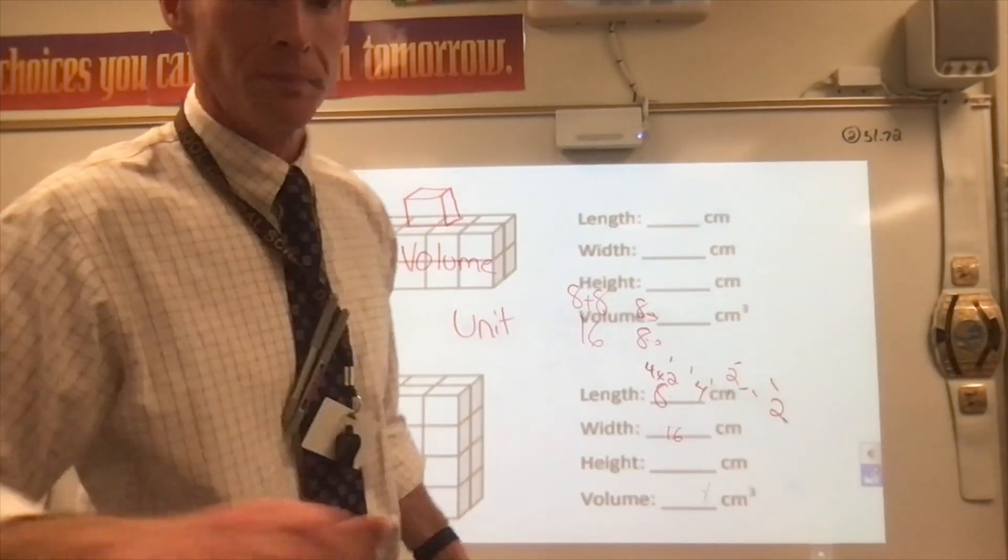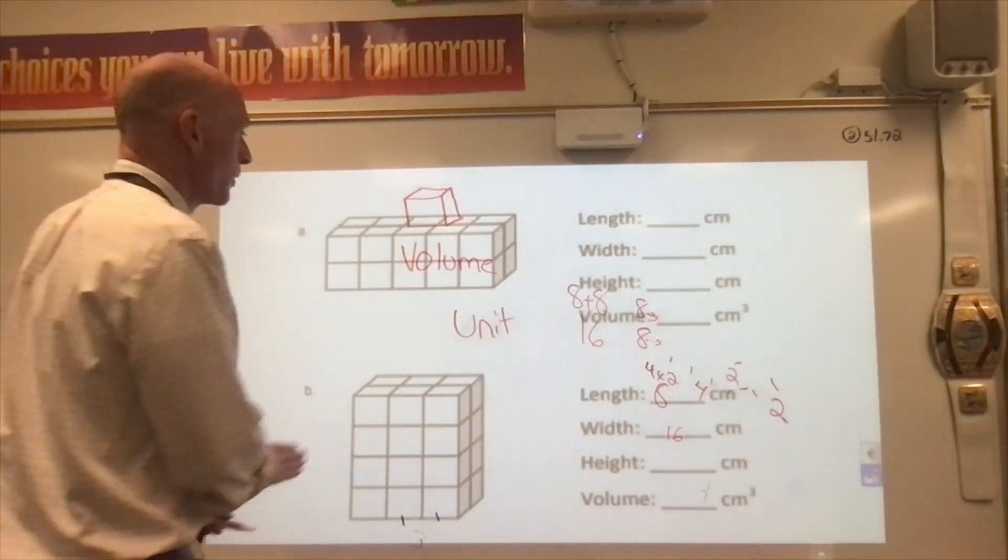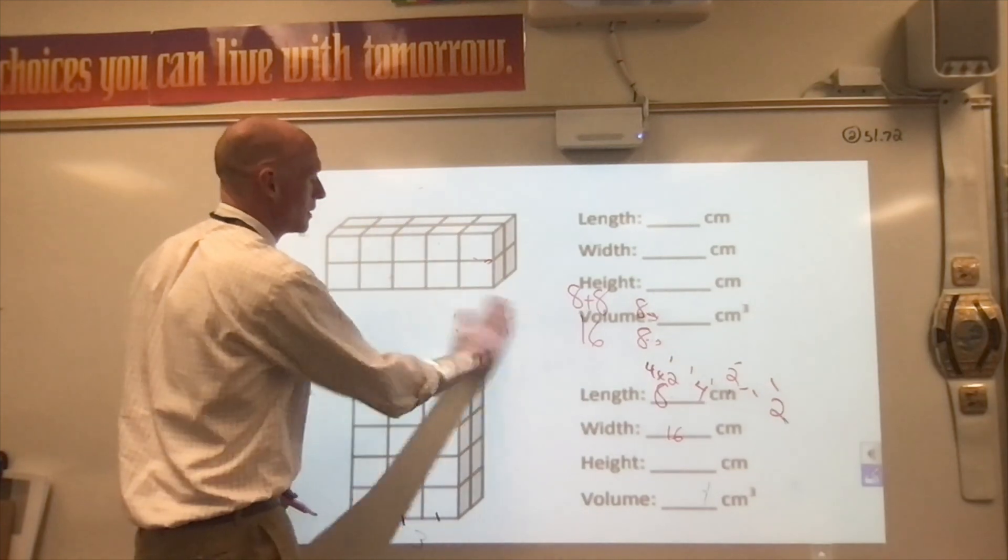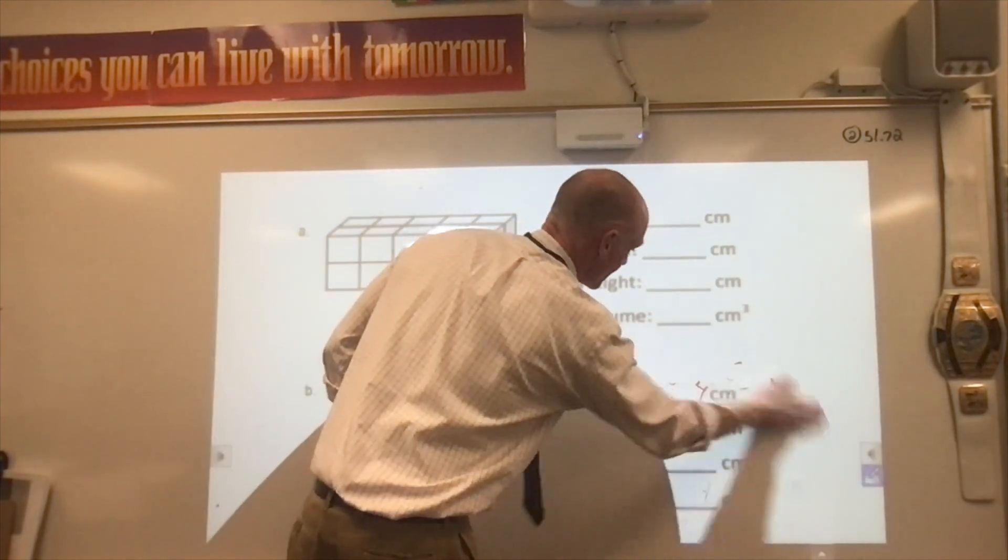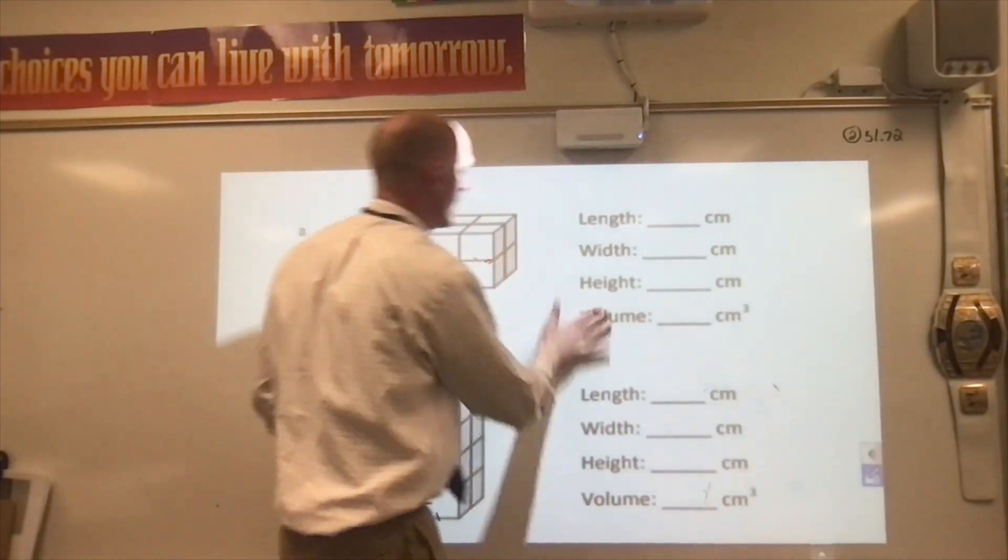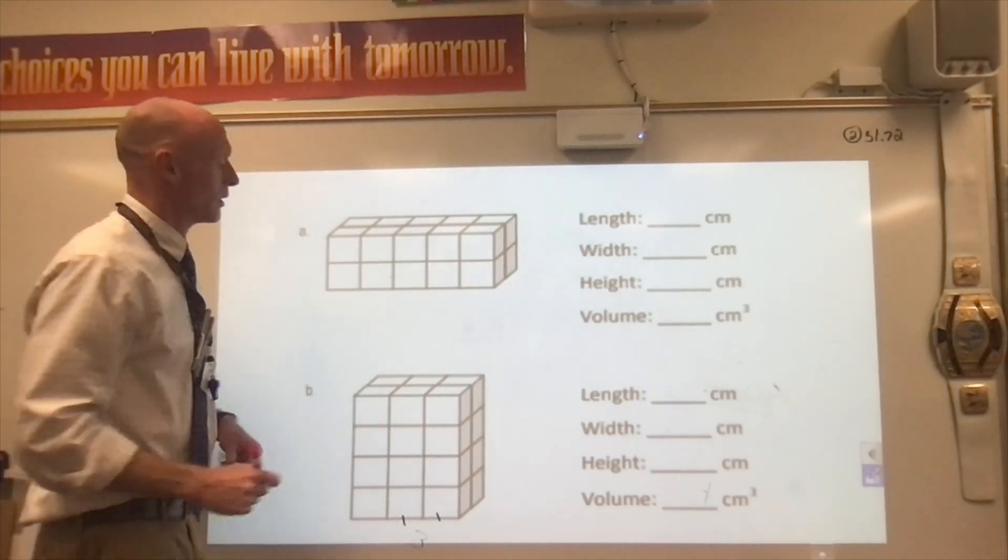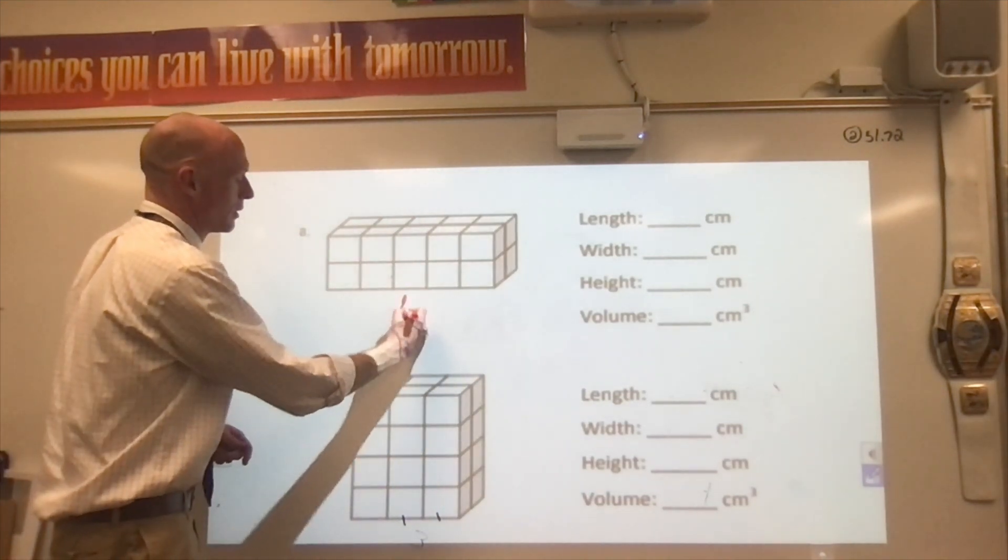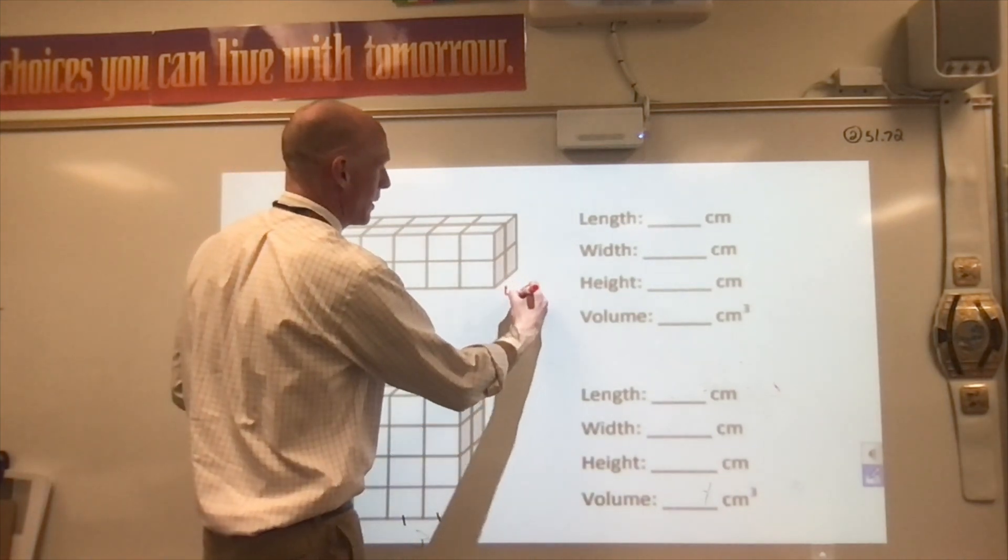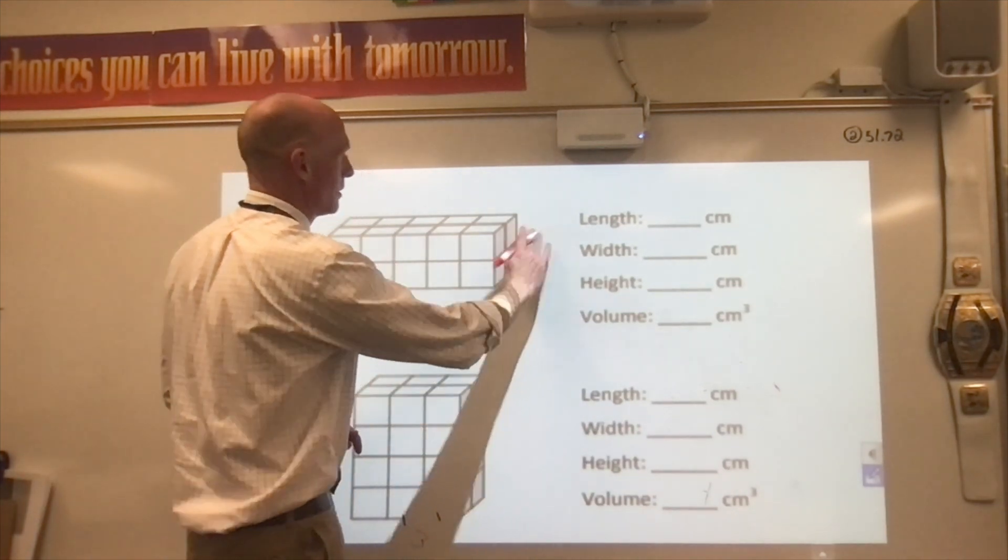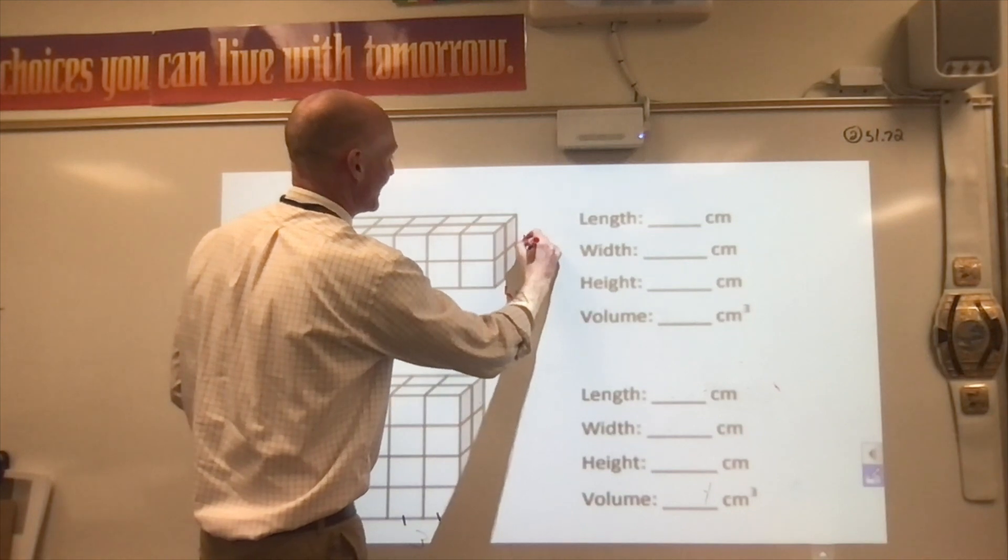Now let's get a look at this. Length, width, height, volume. Perfect. Allow me to erase this right here. Length. I'm going to call this the length. I'm going to call this the width. And I'm going to call this the height. Not five. Height. Perfect.